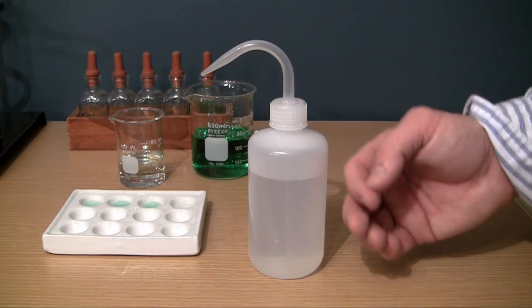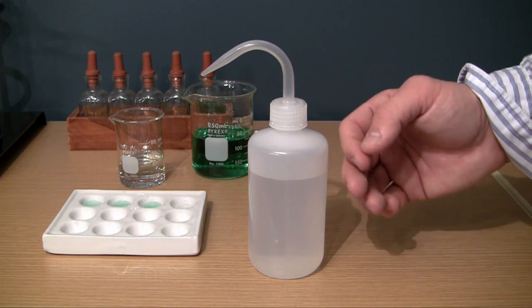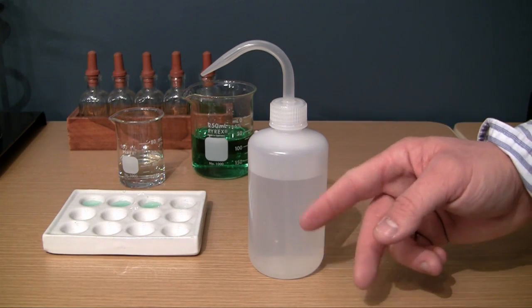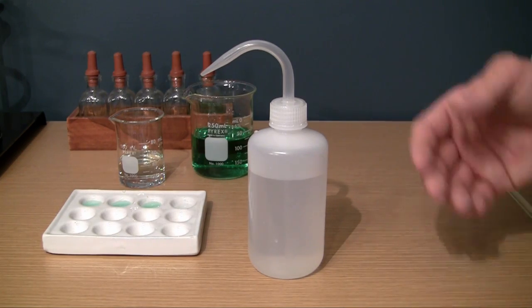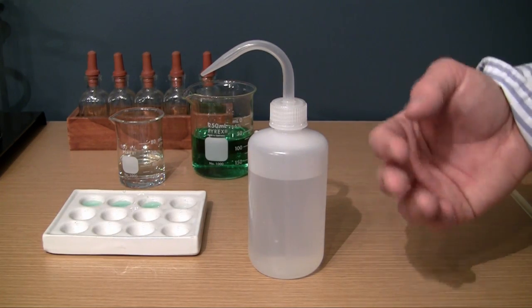Chemicals can eat through plastic, and when you have really thin plastic, it's going to eat through it rather quick. So whenever you're storing a chemical, you typically want to store it in a glass container or a plastic container that's a little bit thicker than a wash bottle.